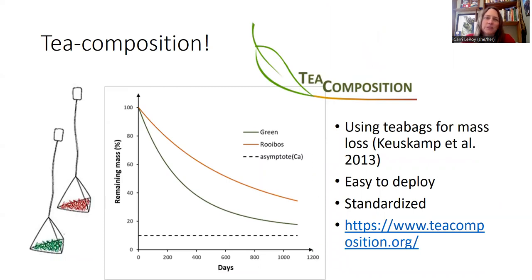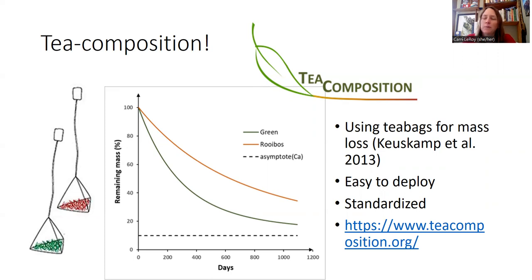I'm going to talk about a couple other really cool global decomposition studies. This one is called TeaComposition. What is in a teabag other than bits of tea leaves? Tea is a shrub — different types, but tea plants tend to be evergreen shrubs. These scientists, often from Europe, developed the idea to just put teabags out because they're already in a neat little package. They use pyramidal-shaped teabags with a plastic mesh on the outside so the bag itself doesn't decompose. The cool thing about these studies is that they're really easy to deploy — you just have to buy teabags and weigh them. They're very standardized.